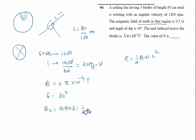B is 0.5, you can say 1 by 2 into 10 raised to the power minus 4. Sin 30 is also 1 by 2. Ultimately it is written as 1 by 4 into 10 raised to the power minus 4. So that is BV.